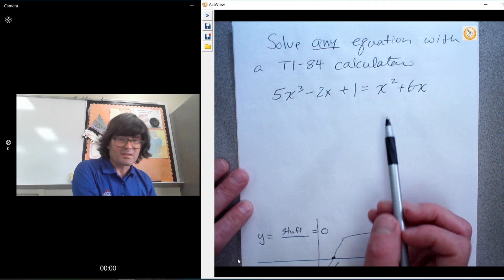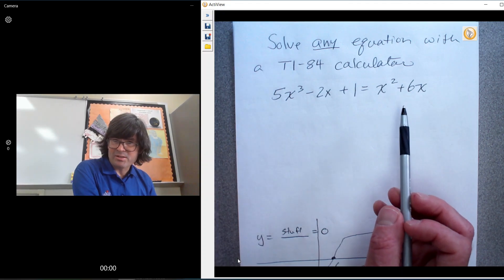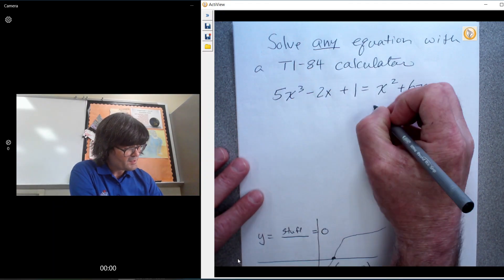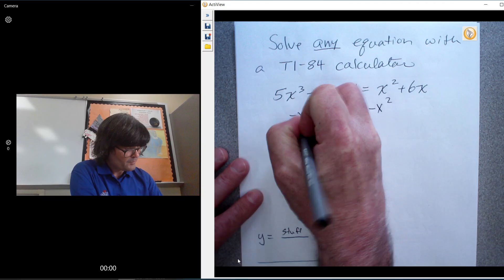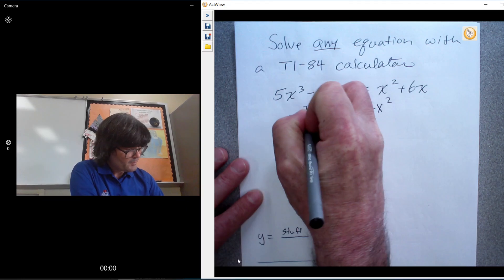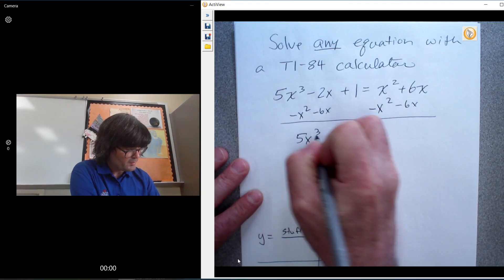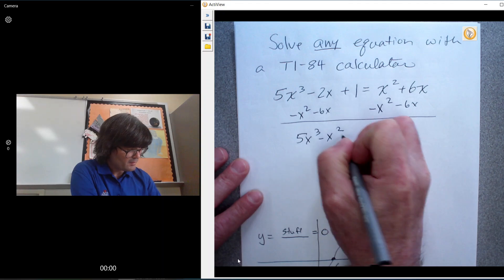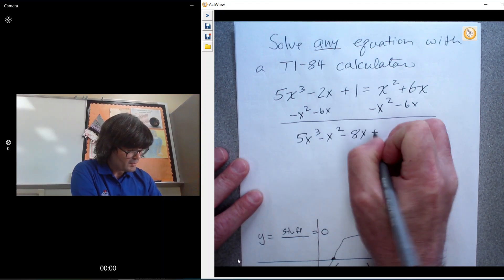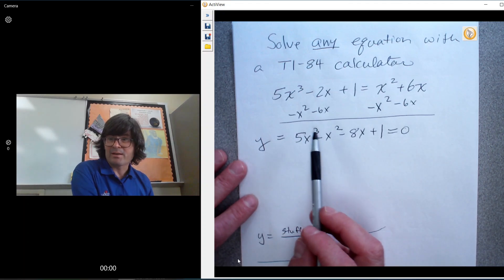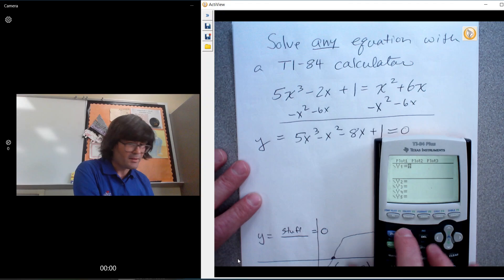Now I don't have that up here, but what you can do is basically take whatever your equation is, move everything over to one side. So for example, here I would take away x squared, take away 6x, and you get 5x³ - x² - 8x + 1 = 0. Just write this as y equals that for now, and it equals zero. And the idea is that if you go to your graphing calculator here,